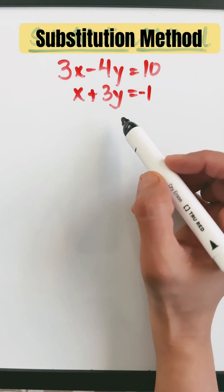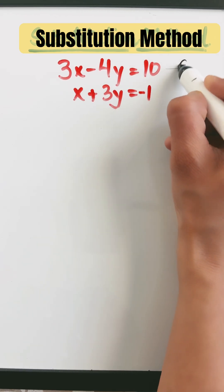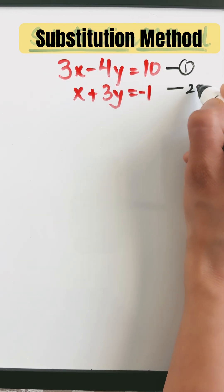Let's solve this system of linear equations by substitution method. My first equation is 3x minus 4y equals 10 and my next equation is x plus 3y equals minus 1.